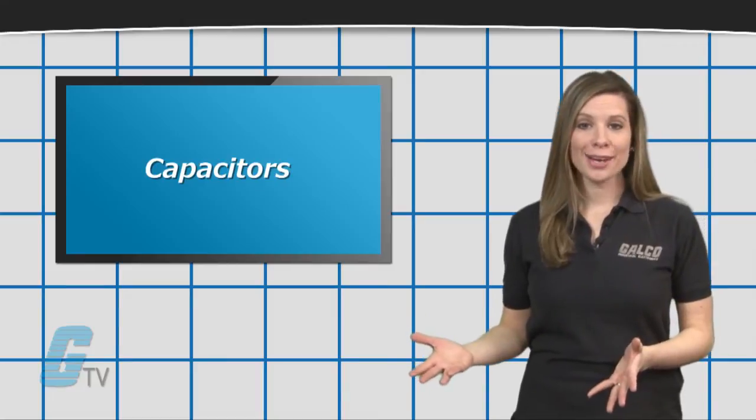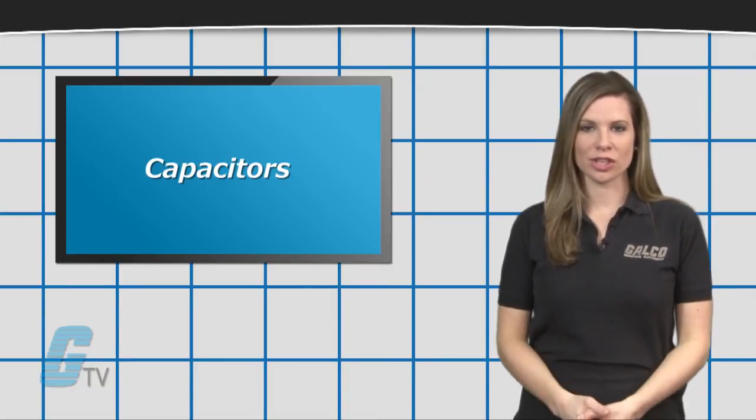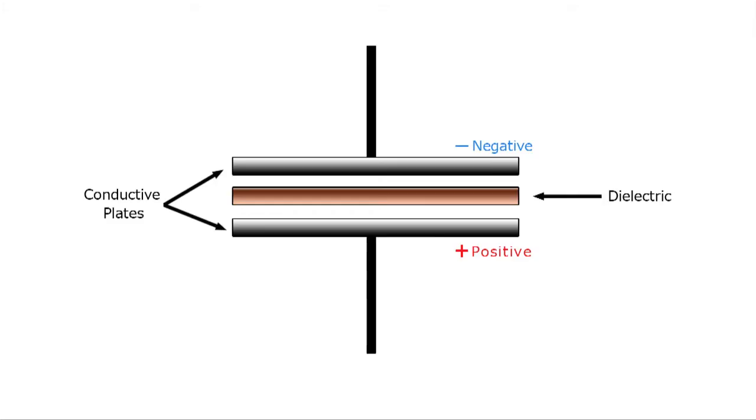How they are able to store energy is through their construction. A capacitor has two conductive parts called plates. These parts are separated by a dielectric, which is a material that is non-conductive.